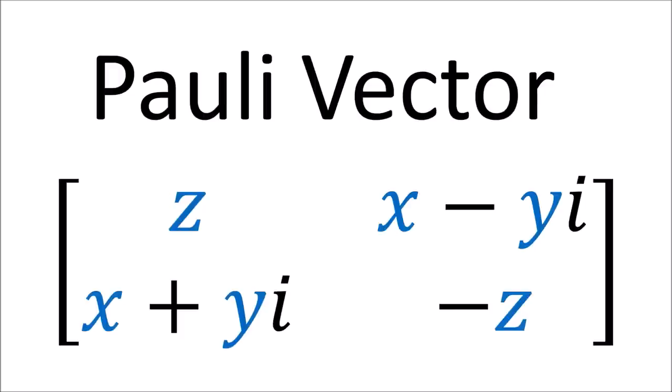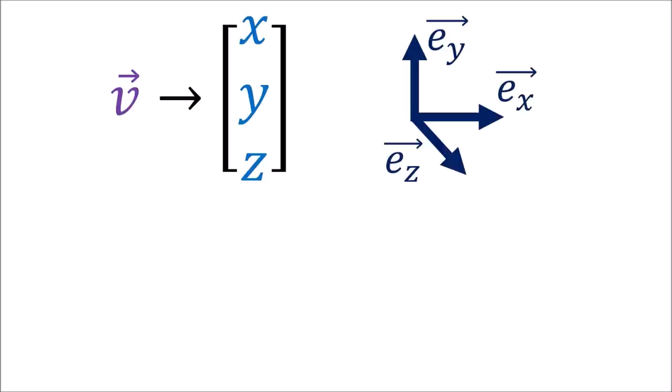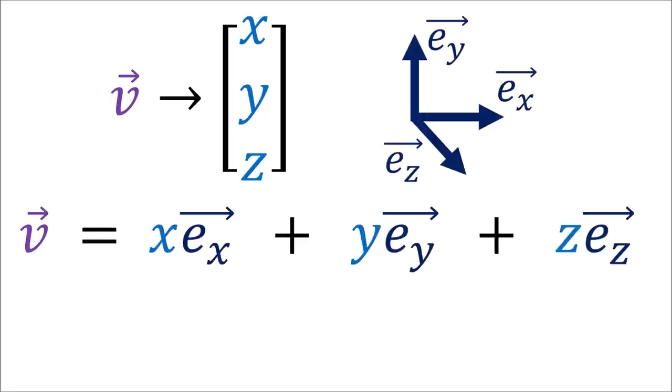Now that we've studied the properties of the sigma matrices, we're going to introduce the polyvector form of writing a vector. We normally write a 3D vector v with components x, y, z as a linear combination of the basis vectors e_x, e_y, and e_z, each scaled by the components.